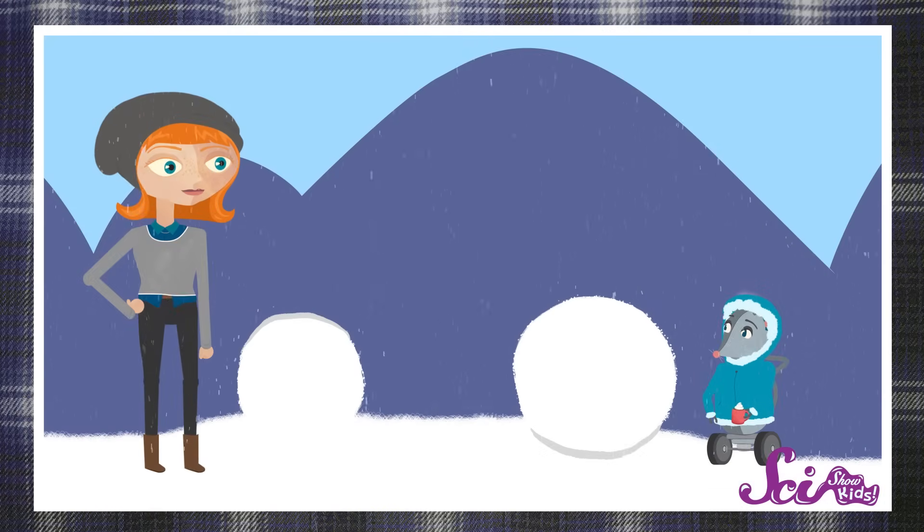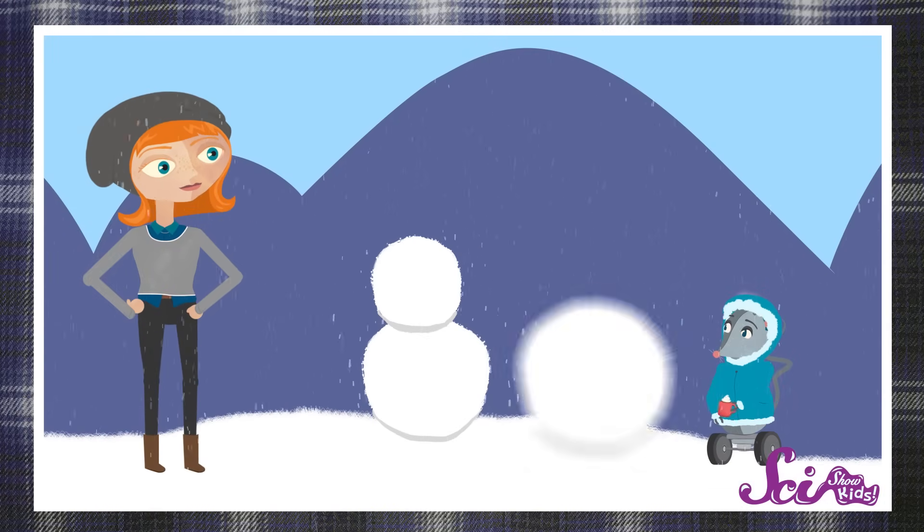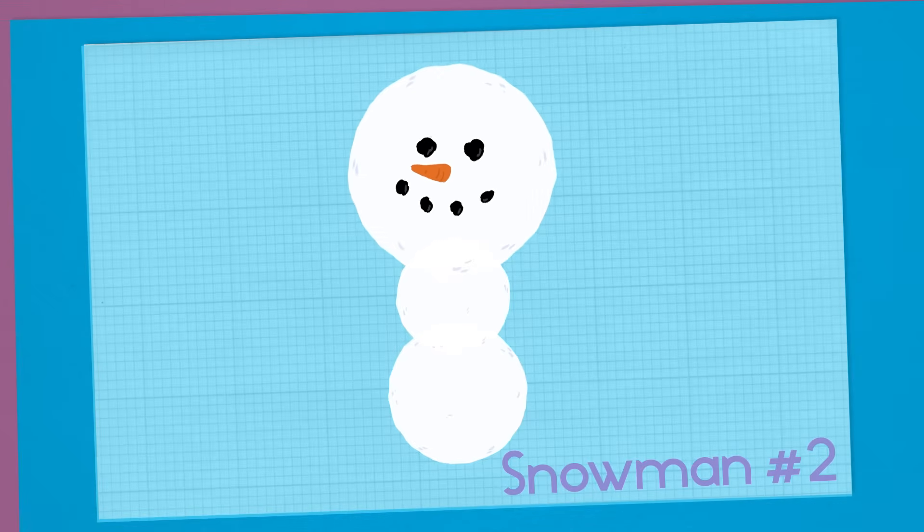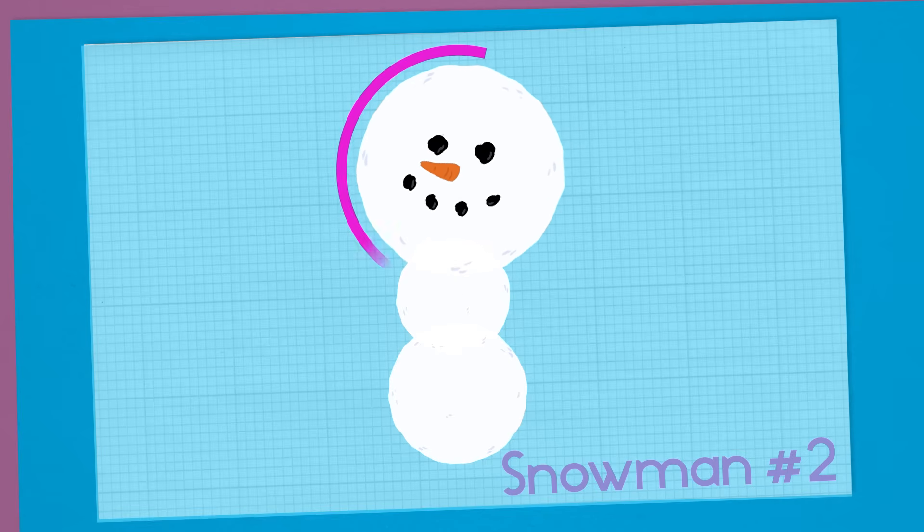Now, what if we put the medium ball on the bottom, then the smallest ball, and the biggest ball on top? Ah, the big one falls off right away, but the smaller ball stays where it is. That's because the little ball has a lot of room to rest on. It's totally supported by the medium ball, so there's nowhere for it to fall. But the biggest ball doesn't have nearly enough room underneath it to sit on.